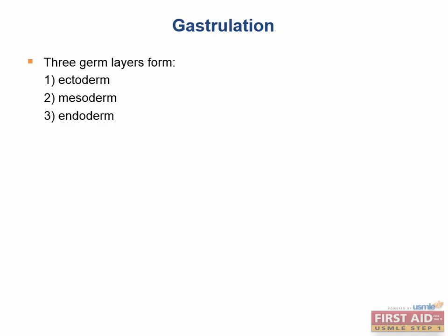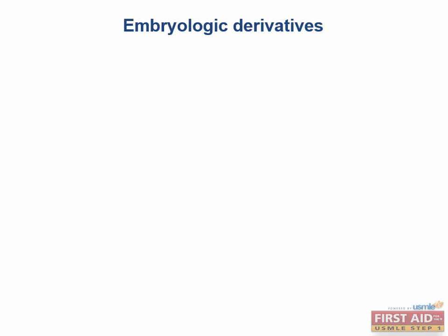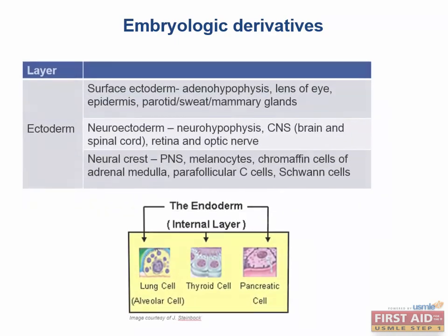Just a few more details about gastrulation. The USMLE really wants you to know that the ectoderm is going to become the brain and spinal cord, the mesoderm becomes the muscles, and the endoderm is your gut tube. That's at the most basic level.